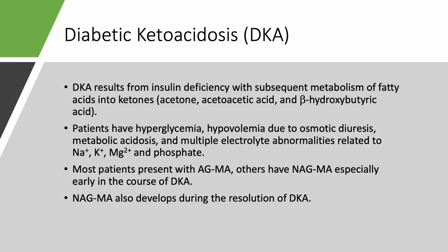Now for ketoacidosis: we have diabetic ketoacidosis, alcoholic ketoacidosis, and starvation ketoacidosis. DKA is a very important cause of anion gap metabolic acidosis. It's seen in type 1 diabetics not taking insulin, and sometimes in type 2 diabetics whose pancreas no longer makes insulin after prolonged disease.